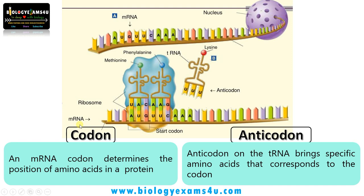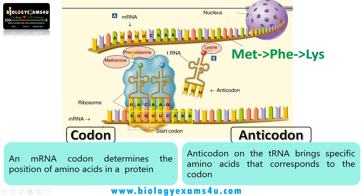Finally, the function of a codon: an mRNA codon determines the position of amino acids in a protein. AUG is the first codon and it codes for methionine. A tRNA complementary to AUG binds to the sequence during translation by ribosomes — a tRNA with anticodon UAC binds to AUG and carries methionine on its amino acid acceptor arm. The second codon UUC codes for phenylalanine, and AAA codes for lysine. So this mRNA codon determines the order of amino acids: methionine, phenylalanine, lysine, etc.